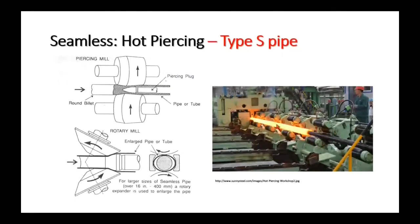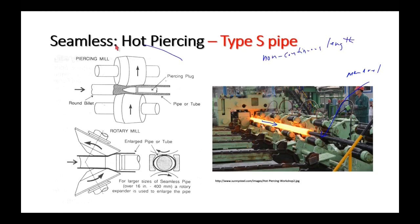For seamless pipe, one method is hot piercing: a smoking-hot billet of round forged steel is literally forced over a mandrel. The pipe metal is forced over the piercer, and the length of the mandrel determines how long the pipe length is. This produces a non-continuous length.